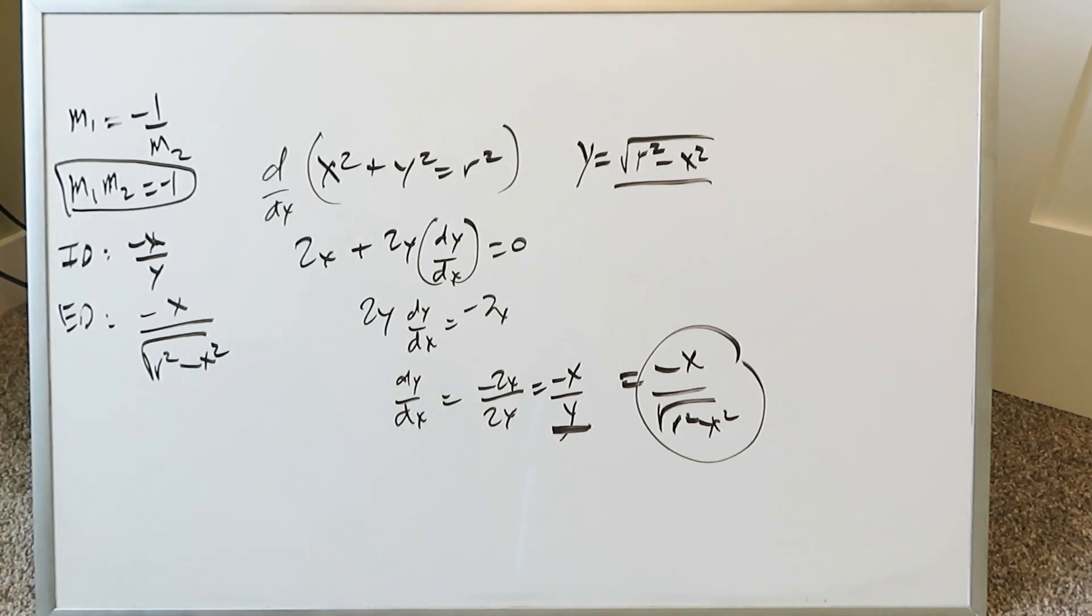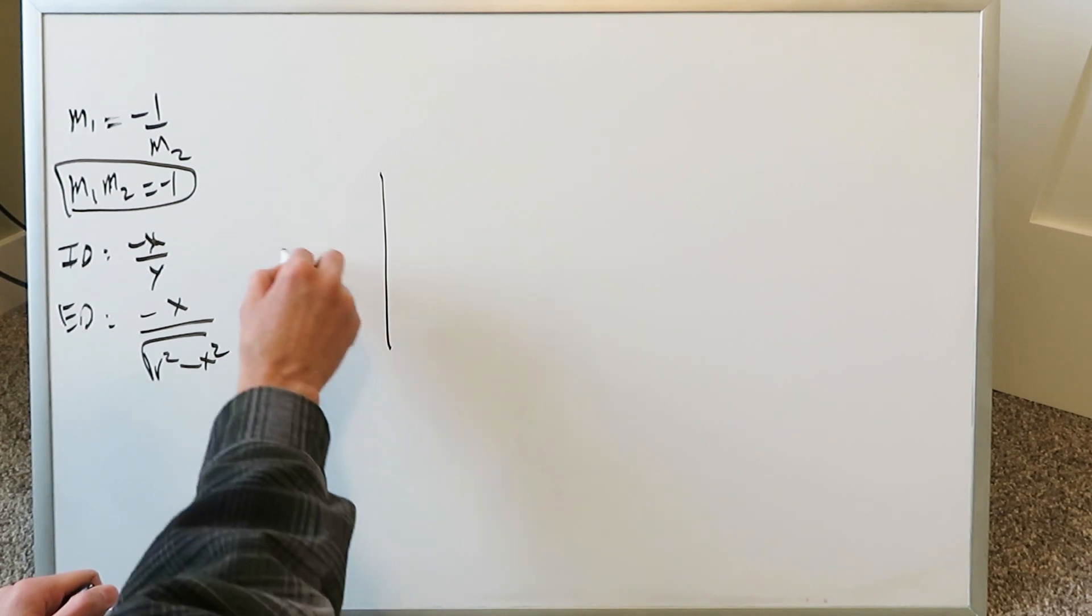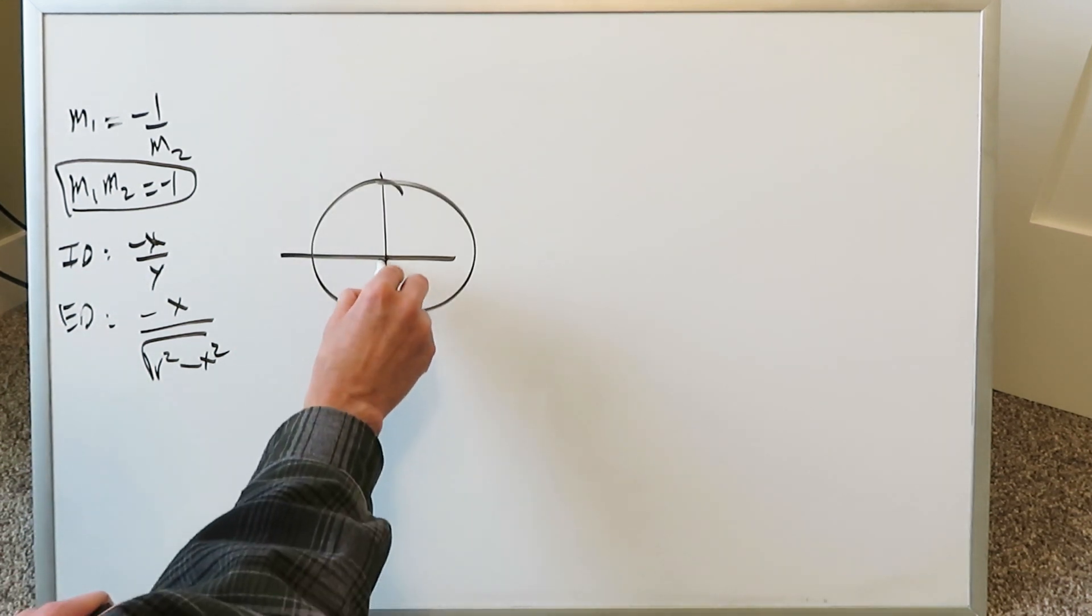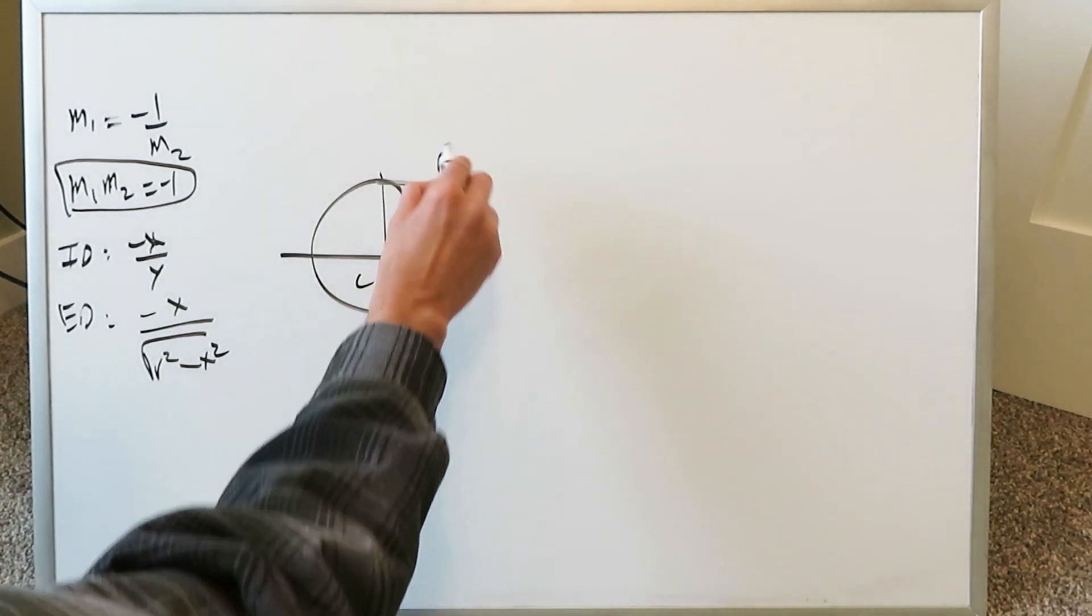Now we've gotten our factors for implicit and explicit differentiation by means of the procedure I've put before you. To proceed further, draw a unit circle. We have a specific center, c. We have a specific point, let that be p.